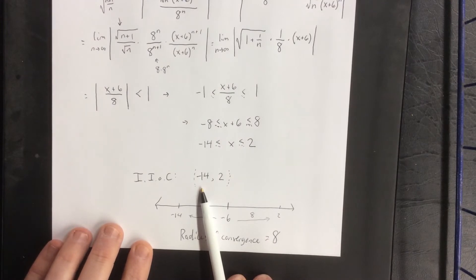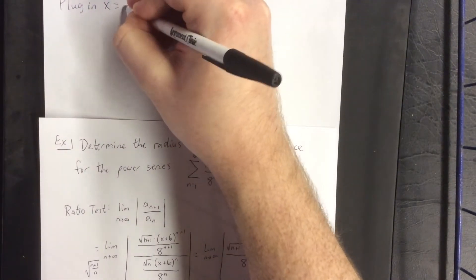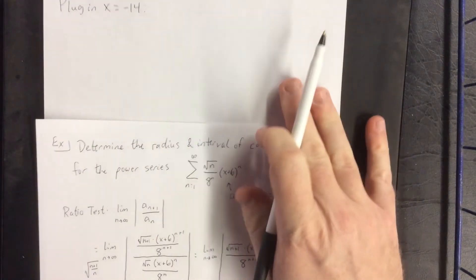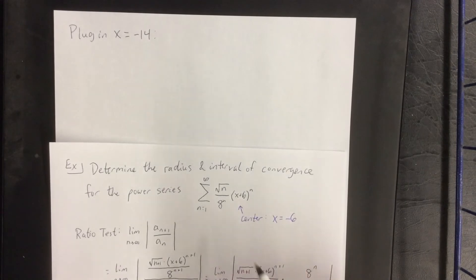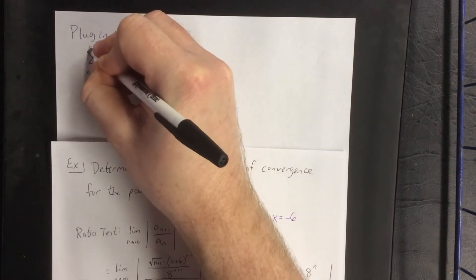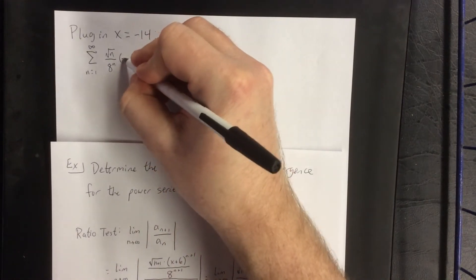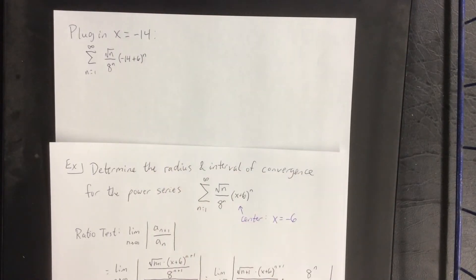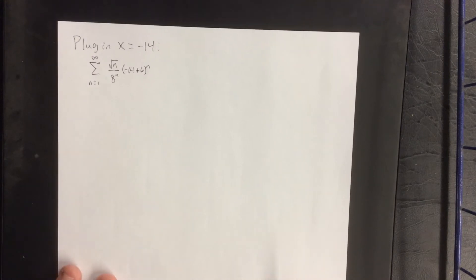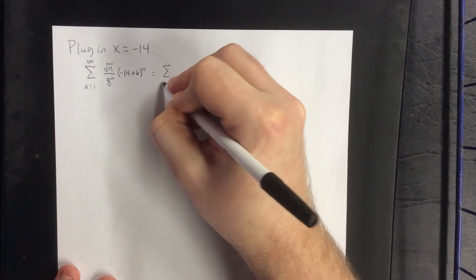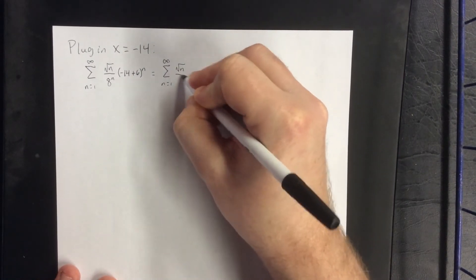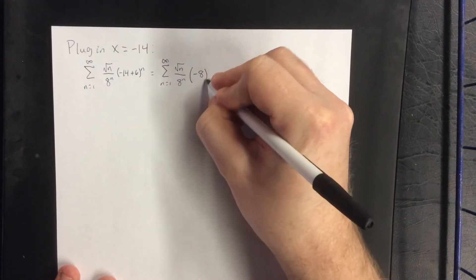Next we need to test the two endpoints to check for convergence there. Plugging x equals negative 14 into the original series gives the sum from n equals 1 to infinity of the square root of n divided by 8 to the n, times negative 14 plus 6 raised to the nth power. Simplifying: square root of n over 8 to the n times negative 8 to the nth power.